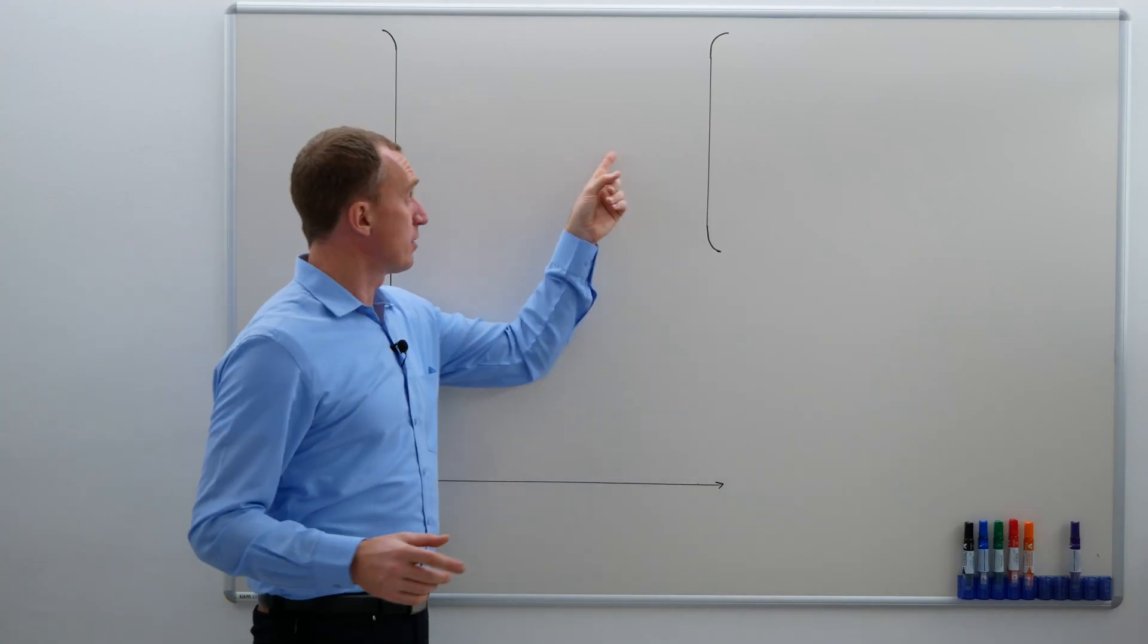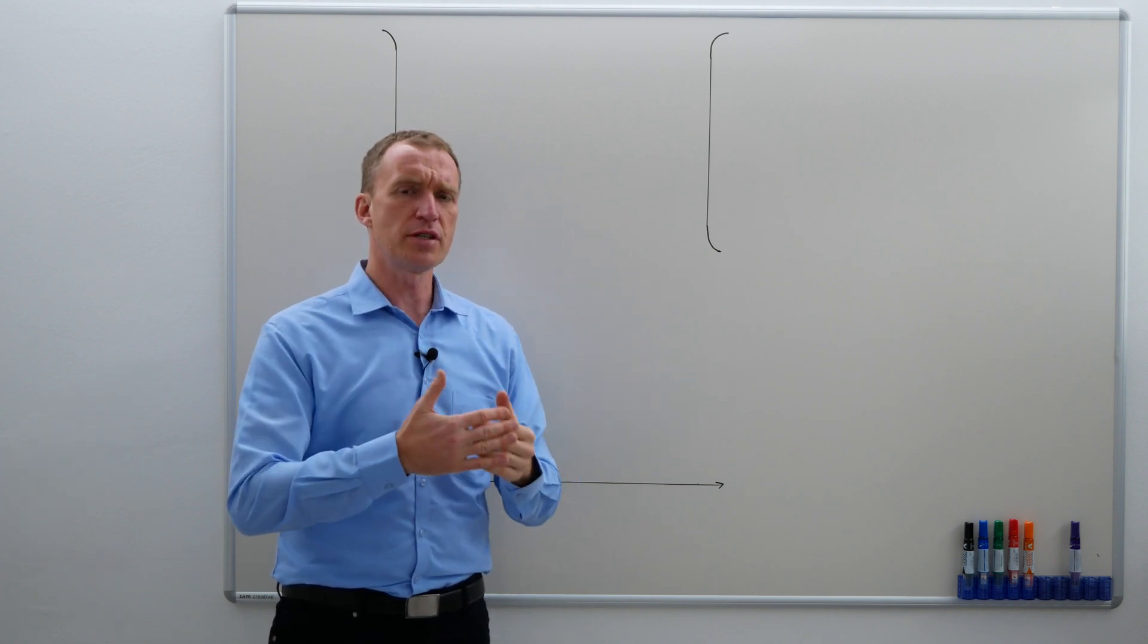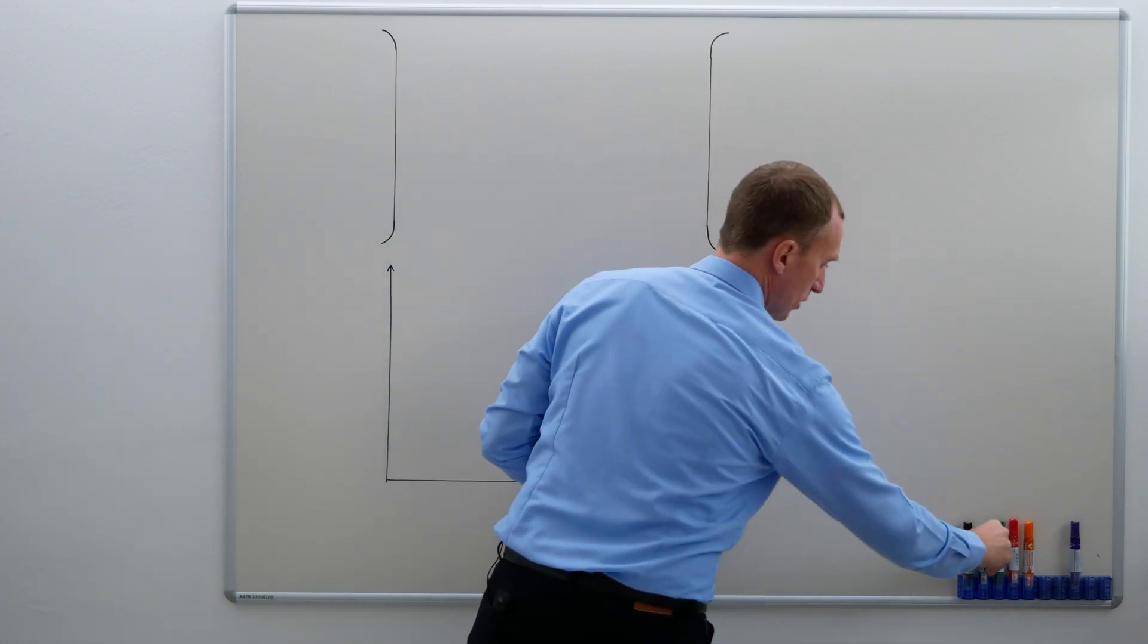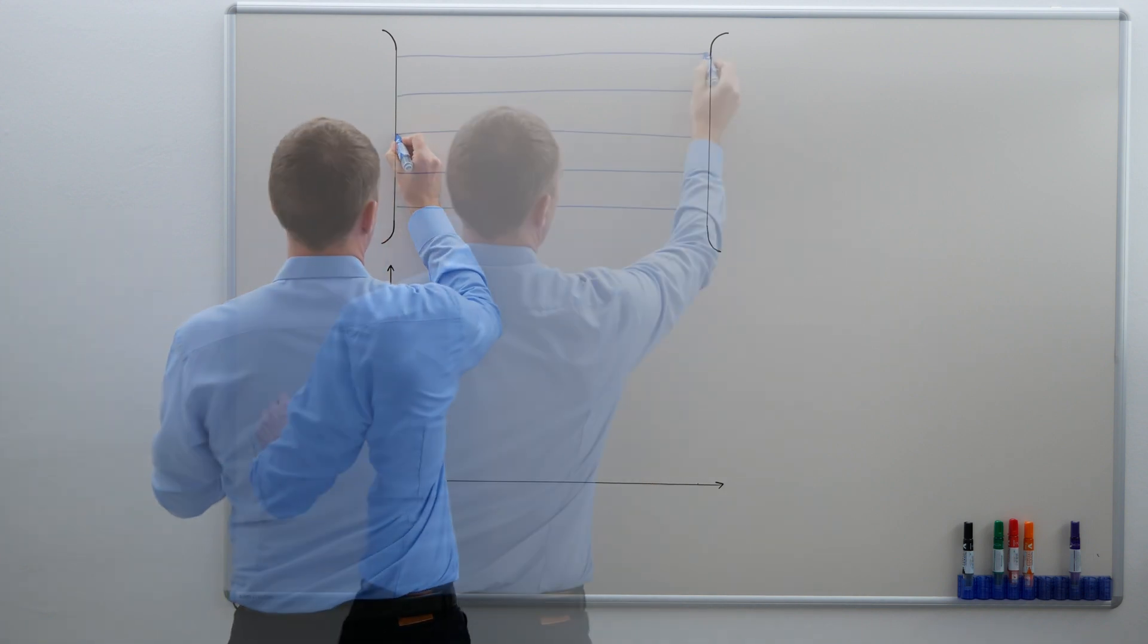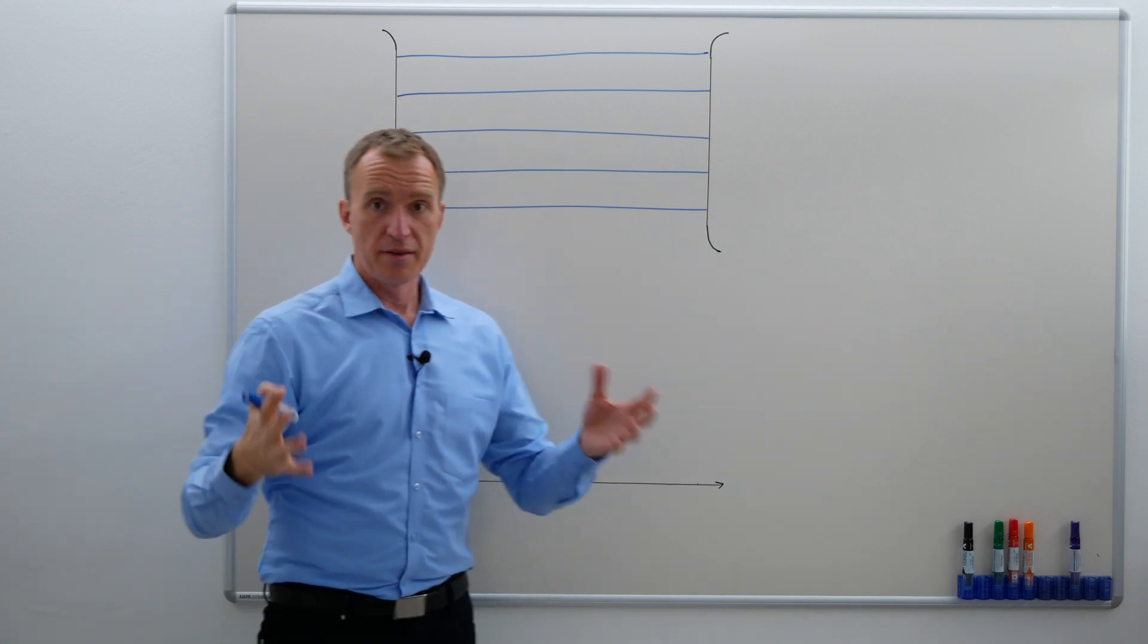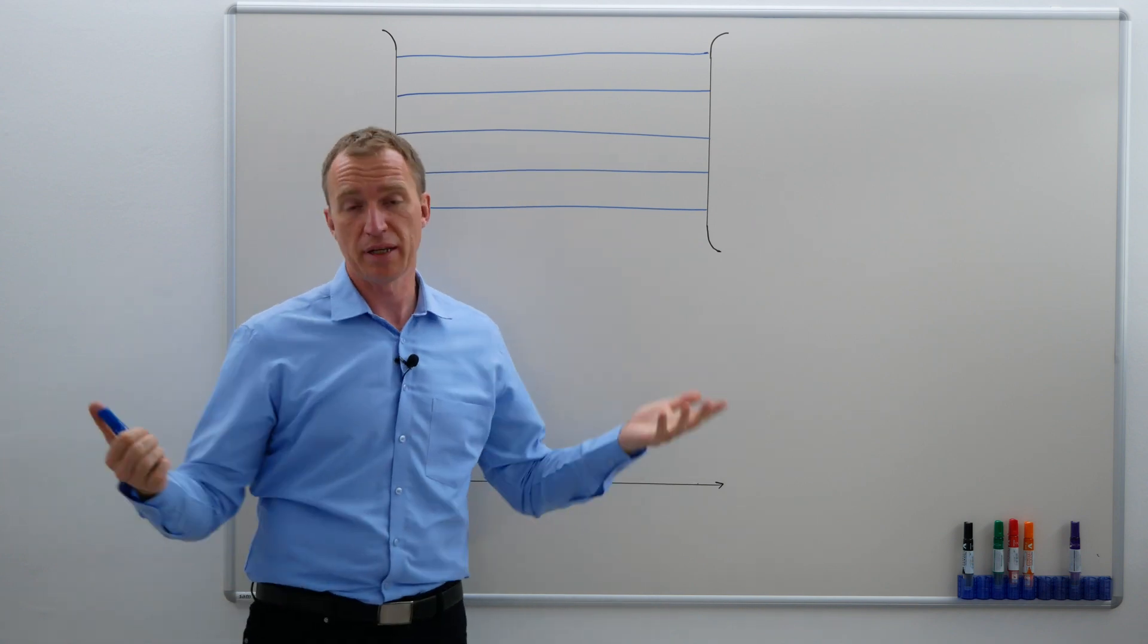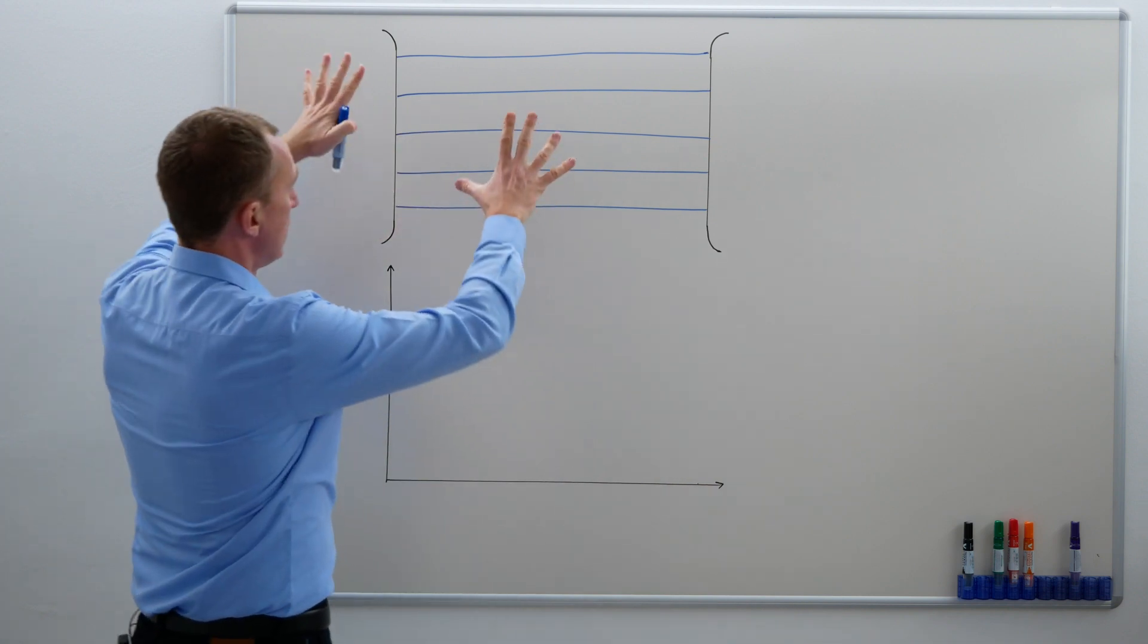Between these two electrodes, we're going to have a homogeneous field. Homogeneous means the electric field strength is the same on all points. So in order to visualize that, I'm going to draw the electric field lines the best I can. The idea is that these electric field lines are parallel and have the same distance to each other.